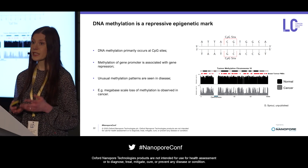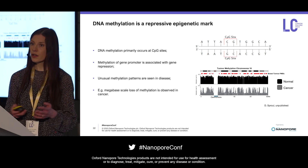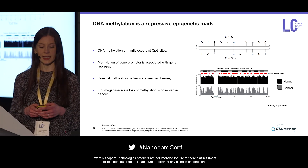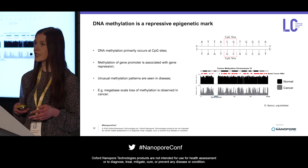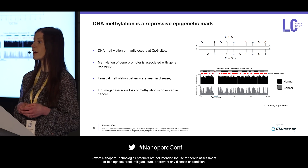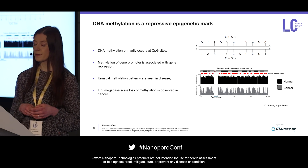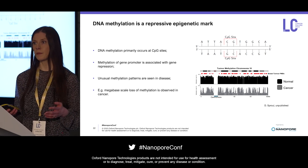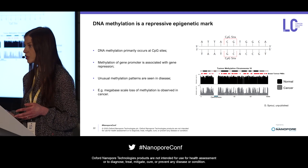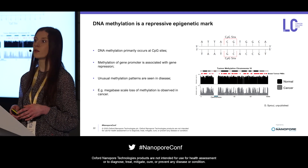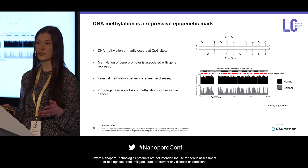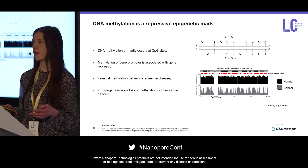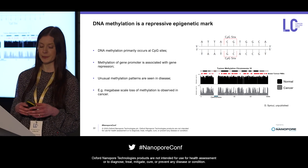DNA methylation is an epigenetic mark primarily found at CpG sites — that's places in the genome where a cytosine sits next to a guanine in the 5' to 3' direction. You'll often hear people calling methylation a repressive epigenetic mark because if the promoter of a gene is methylated, that normally associates with the gene being repressed.